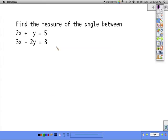So here we have two linear equations. We want to know what the measure of the angle between them is. And when we talk about the angle between two lines or two vectors, we always refer to the acute angle, just as a standard convention.